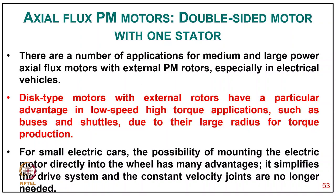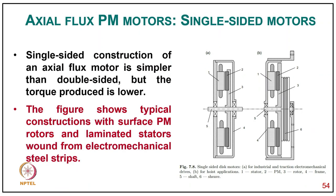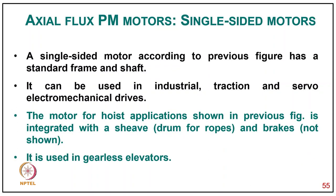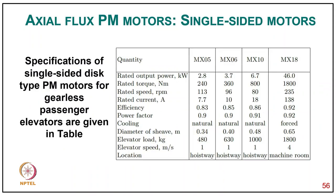For small cars, mounting electric motors directly into the wheels simplifies the drive system since constant velocity joints are no longer needed. Single-sided construction of an axial flux motor is simpler than double-sided but produces lower torque. A single-sided motor according to the figure has a standard frame and shaft and can be used in industrial traction and servo electromechanical drives. The motor for hoist applications is shown with a sieve drum for ropes and brakes, used in gearless elevators. The table gives specifications for single-sided disc-type PM motors for gearless passenger elevators, with ratings from 2.8 kW to 246 kW.